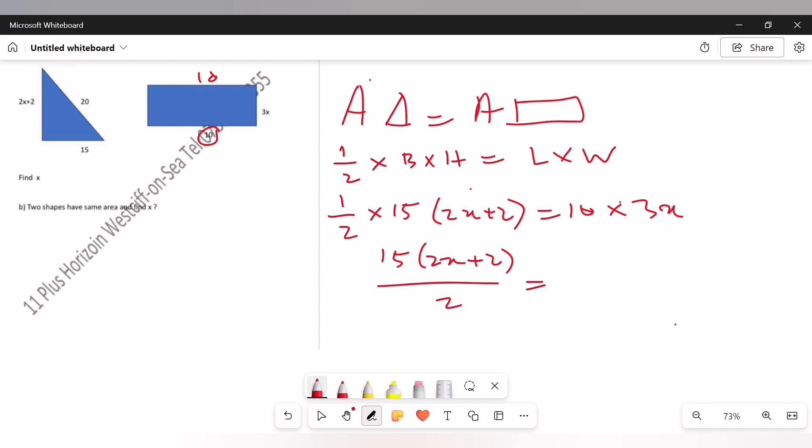So 2 is dividing here, we're going to cancel it by multiplying both sides by 2. So this 2 cancels with 2. The remaining will be 30 times 2 which is 60x, and this one is 15(2x plus 2). We need to simplify.